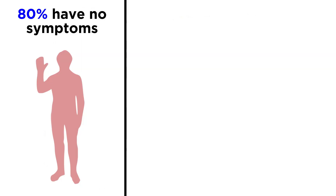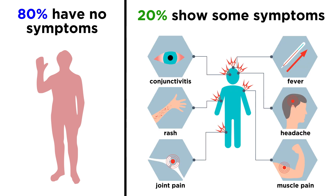As with West Nile, about 80% of Zika infections are asymptomatic altogether. For those that do show symptoms, this will typically include a fever, headache, joint pain, muscle pain, or a rash.